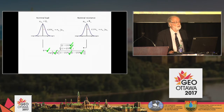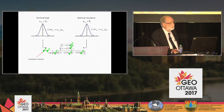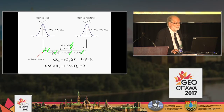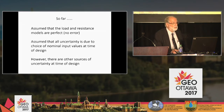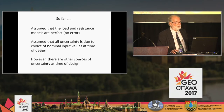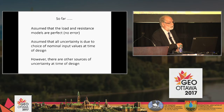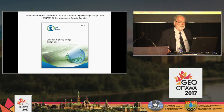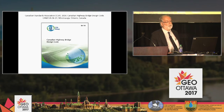So now we have all the ingredients to compute the resistance factor. Assuming a target beta value given to us by regulators, we can generate load and resistance factors for our simple limit state equation, ending up with values such as 0.9 for the resistance factor and 1.35 for the load factor. But so far we have assumed that the load and resistance models are perfect — that all uncertainty is due to choice of the nominal input values at time of design. However, there are other sources of uncertainty. We can explore this further using the concept of level of understanding, recently adopted in the Canadian Highway Bridge Design Code.